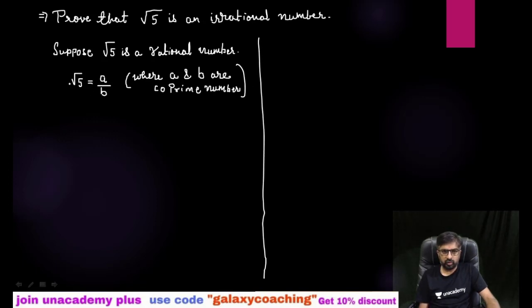Now we want to remove this root. So take this b here. So root 5 b equals to a. Now I want to remove this root, so squaring both sides. Root 5 b squared equals to a squared. So here you will get 5 b squared equals to a squared.